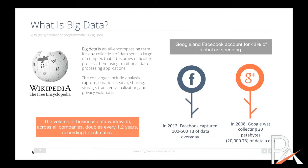The challenges include analysis, capture, curation, search, sharing, storage, transfer, visualization, and privacy violations — and all of those things are done in programmatic when you're dealing with the amounts of data that we deal with. As an example, Google and Facebook account for 43% of global ad spending — and it's probably higher now than when I created this slide.